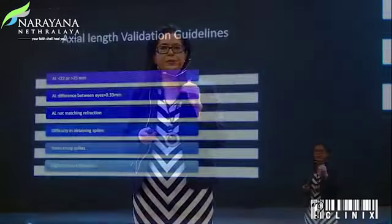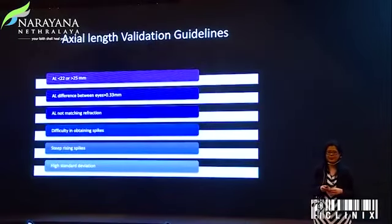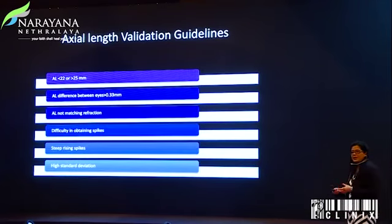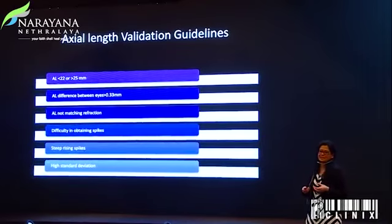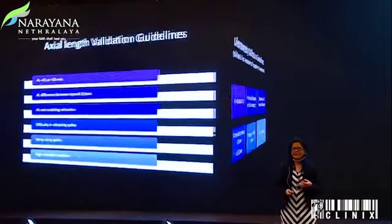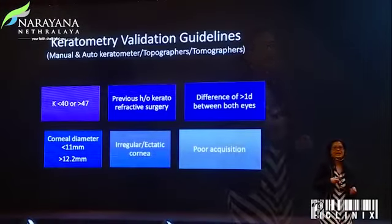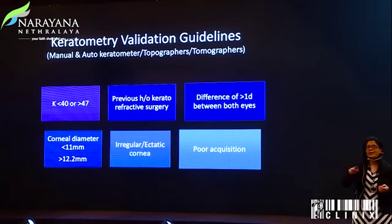I won't go into each point, but I want to highlight a few key points where you need to validate and go back to your calculations to get it right every single time. You would want to validate your axial length. For keratometry, don't bank on one instrument. Start with your manual K, your auto K, your topographers, your tomographers — look at all of them in total.